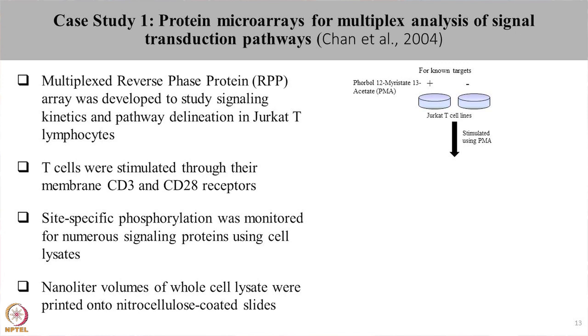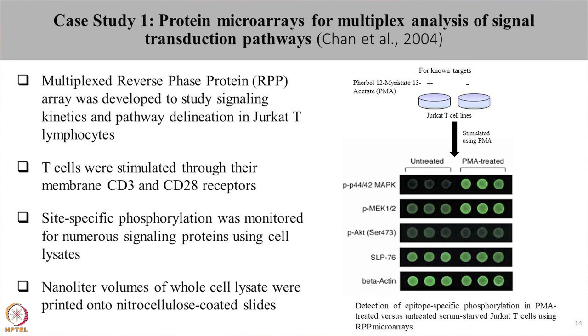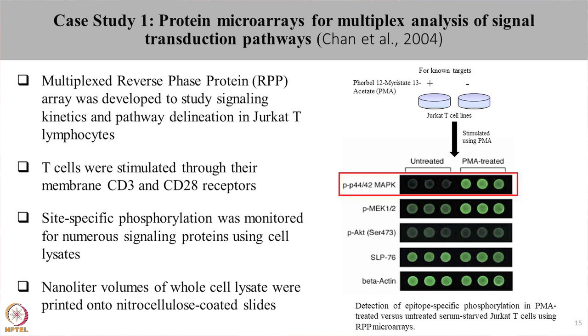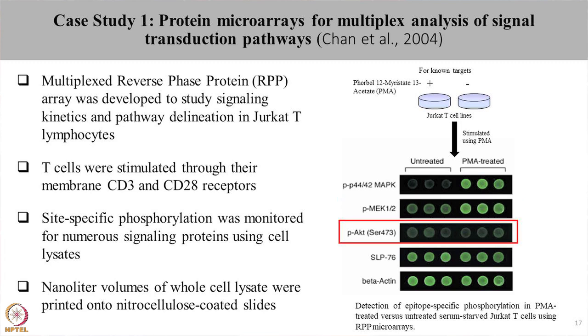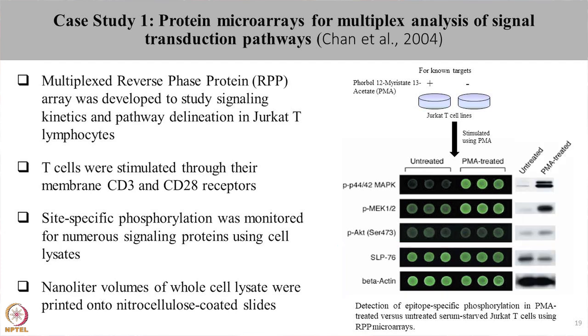To check whether this reverse phase protein microarray is working, they first took the Jurkat T cell lines and activated it with PMA, which is phorbol-12-myristate acetate. PMA activates protein kinase C, which once activated leads to phosphorylation of MAPK and MEK proteins. The cell lysates were taken and imprinted in triplicates for the untreated as well as PMA treated cell lines. MAPK showed very good phosphorylation upon PMA treatment whereas untreated cells did not show any phosphorylation. MEK also showed differential phosphorylation upon PMA treatment whereas AKT, which is not a target of protein kinase C, showed no change. SLP-76 and beta-actin were used as controls. The same was verified using Western blot.